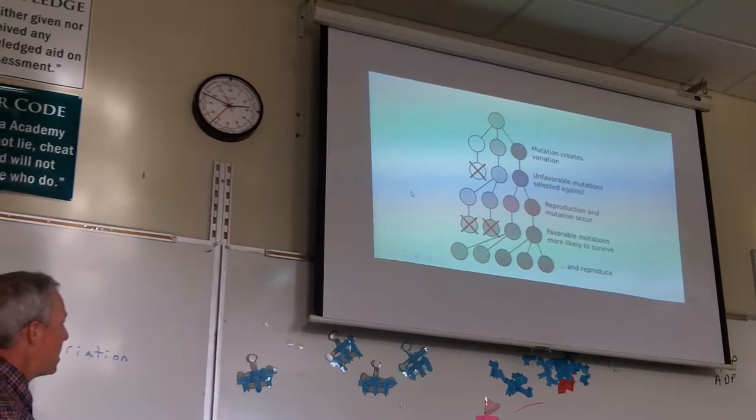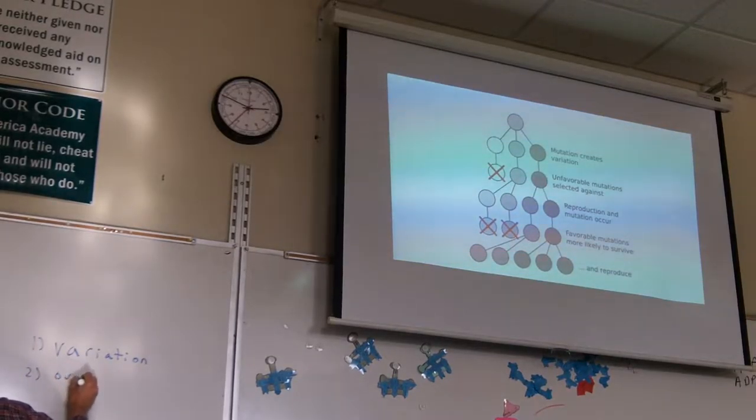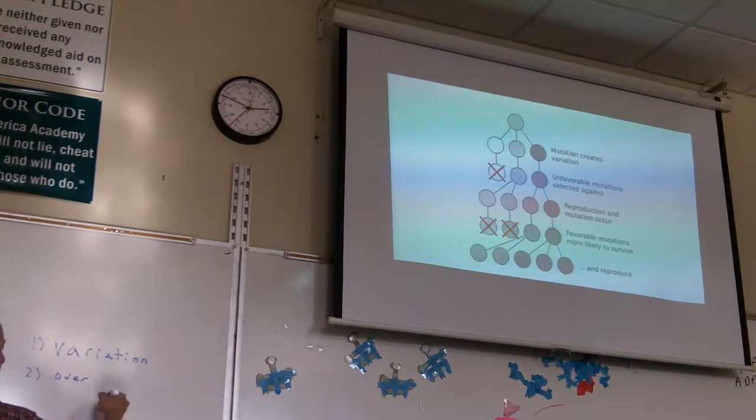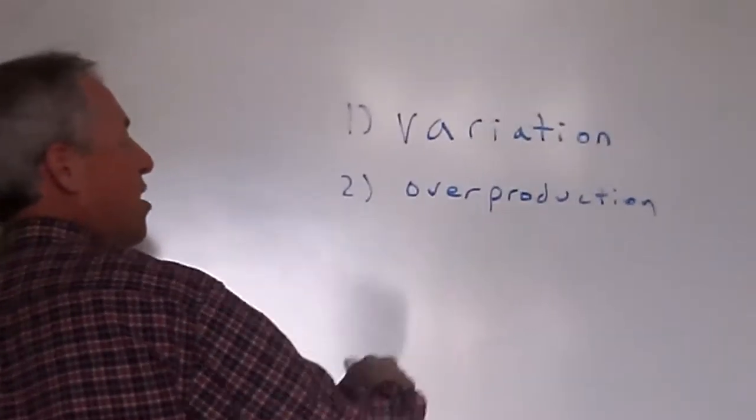Next, there has to be an overproduction. Too many organisms, more organisms born than can survive. So some have to die. That's what the overproduction means.